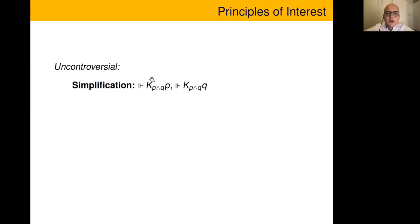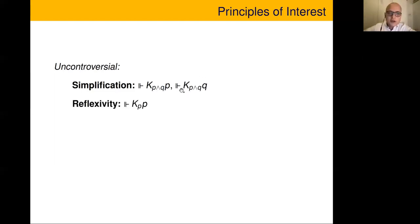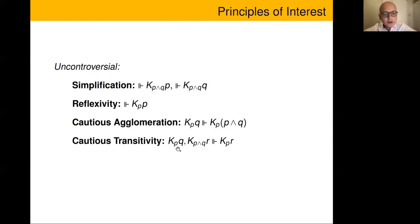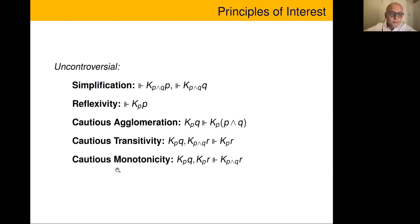The uncontroversial principles are: simplification — knowing p and q is sufficient for knowing p; reflexivity — knowing p is sufficient for knowing p; cautious agglomeration — if knowing p is sufficient for knowing q, then knowing p is sufficient for knowing p and q; cautious transitivity — if knowing p is sufficient for knowing q and knowing p-and-q is sufficient for knowing r, then knowing p is sufficient for knowing r; and cautious monotonicity — if knowing p is sufficient for knowing q and r separately, then knowing p-and-q is sufficient for knowing r.